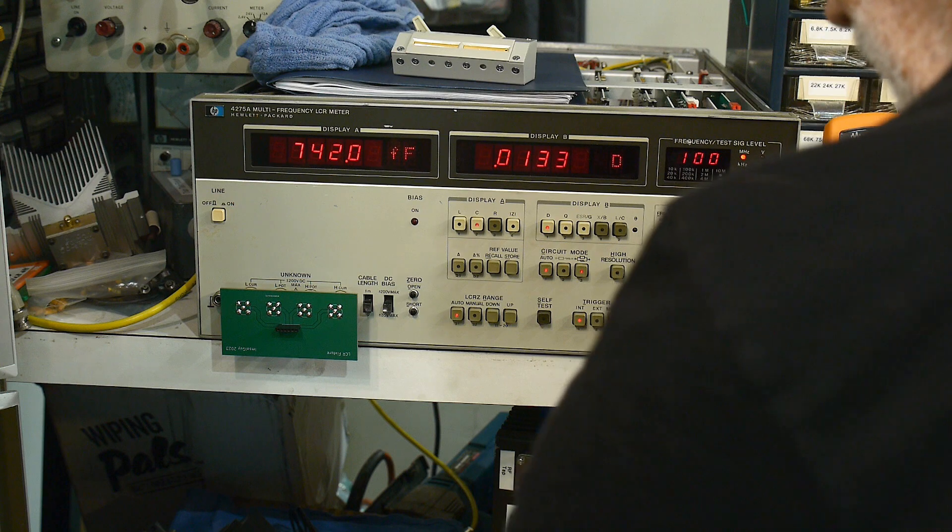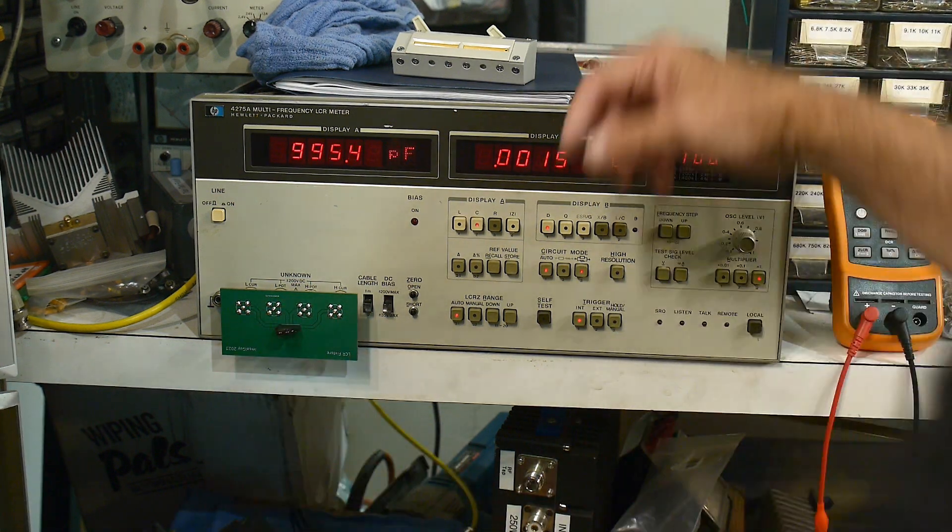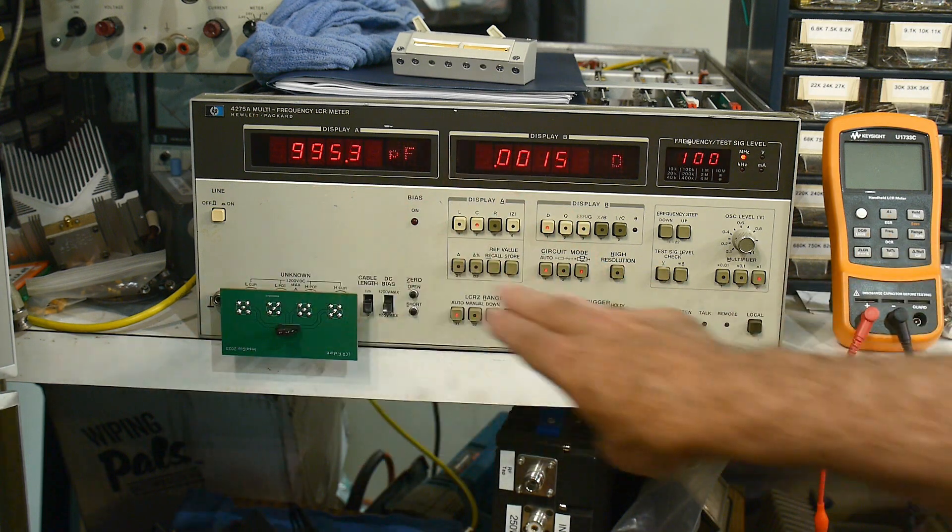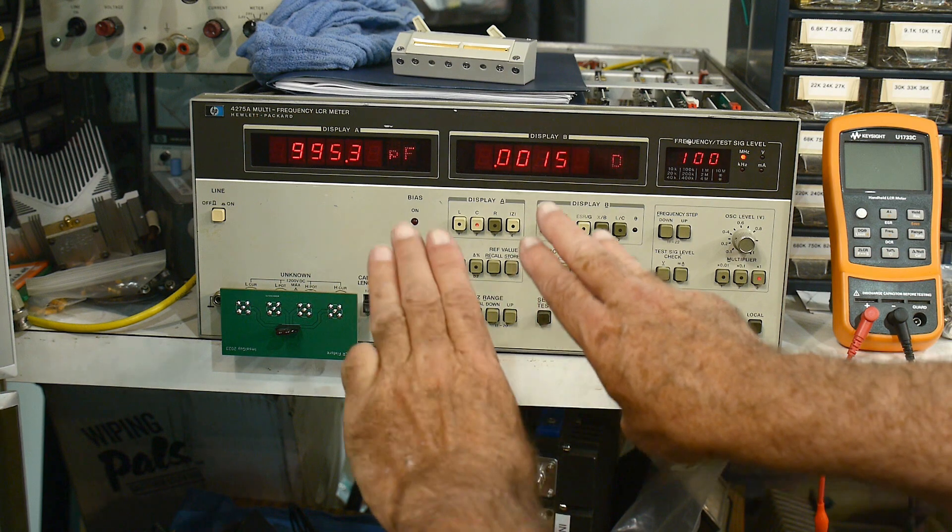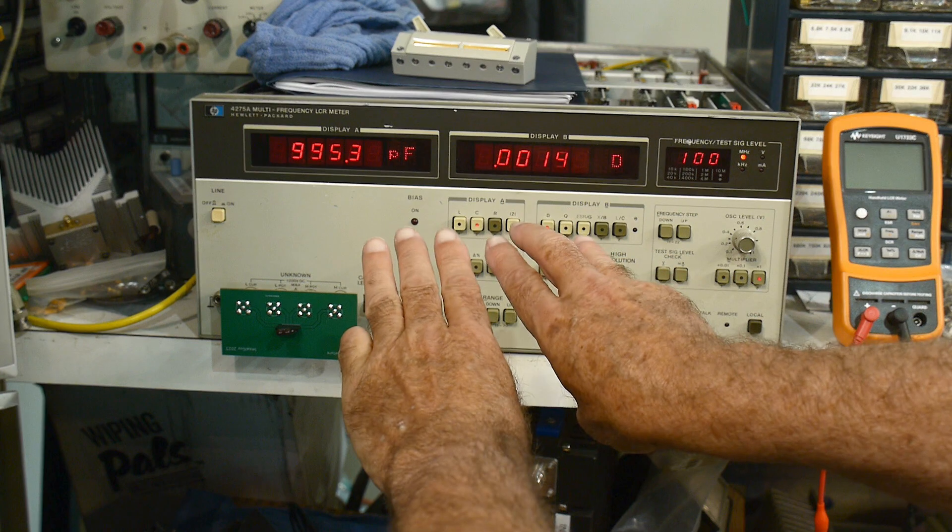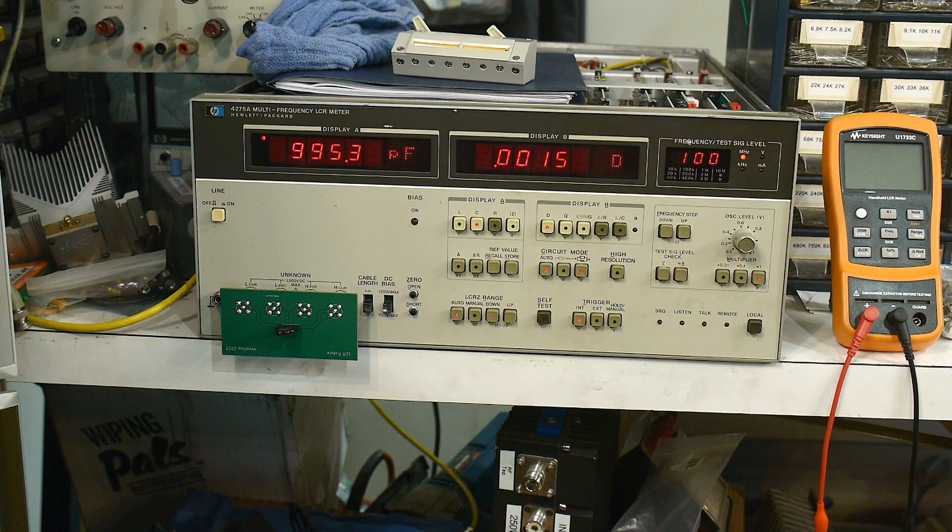Now it's on there, so we can take a through hole part and jam it in there. It's a six long connector, but these three and these three are connected together, so you can have different spaced parts. So there we go, a thousand picofarads. It's working great.